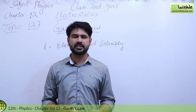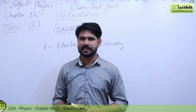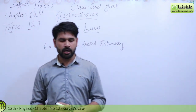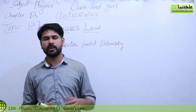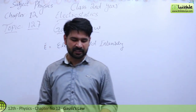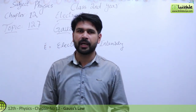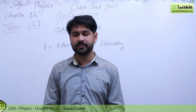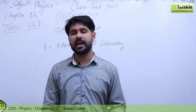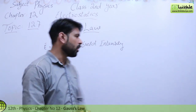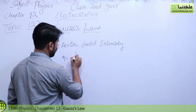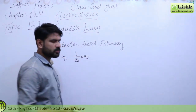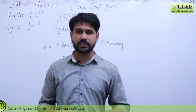The electric flux concept we have learned in topic 12.6 — electric flux is the number of electric field lines passing through a unit area. Before, we learned that electric flux through a closed surface enclosing a unit positive charge equals 1 over epsilon-naught multiplied by q.